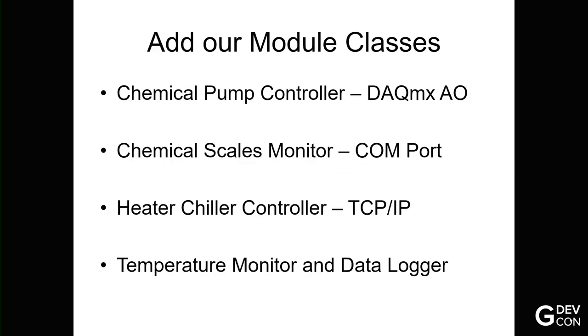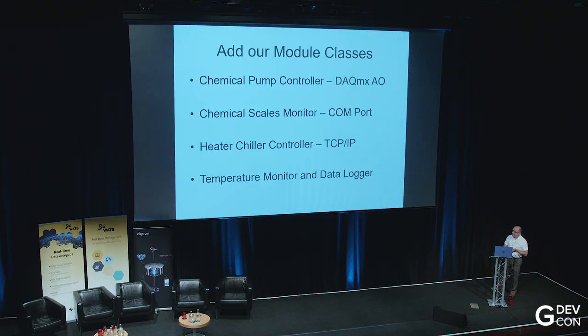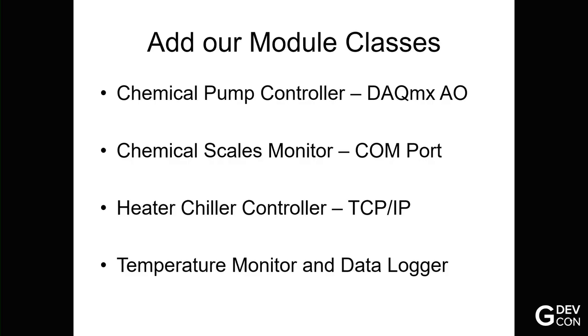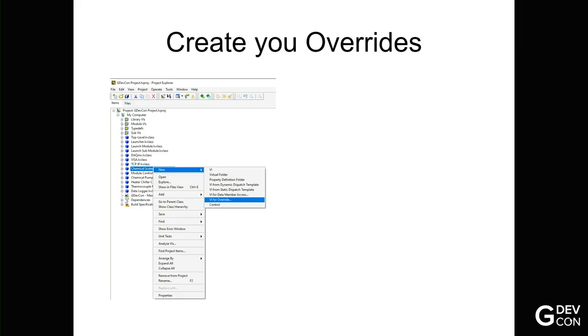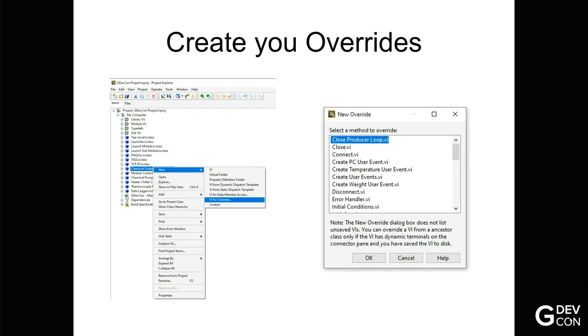So we looked at the input and output classes. There's not much going on there, just your DAQmx physical channel names, your Visa resource names and IP addresses. So that's just a way of calling the same thing several times. You then have add some module classes. So we've talked about a chemical pump controller. That'll be a DAQmx-AO class. We've got chemical scales monitor. That'll be a COM port, so Visa. And we've got a heater chiller controller, which is TCP-IP. And finally, we've got a temperature monitor and our data logger. So we create a class for each of those actors. It doesn't matter how many times we call them. We then go in and start creating our overrides. And the way we do that is, right-click on our class, new VI for override.